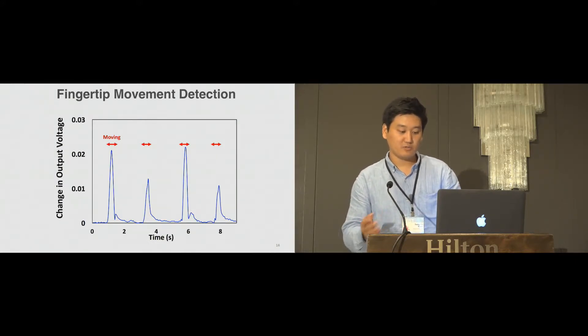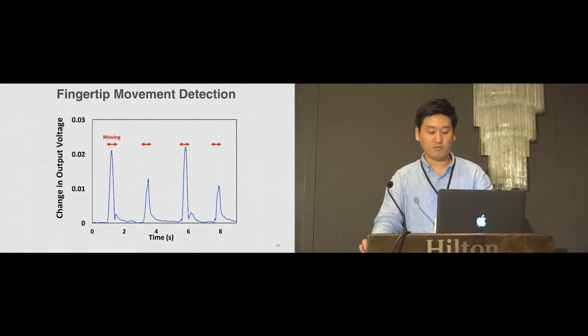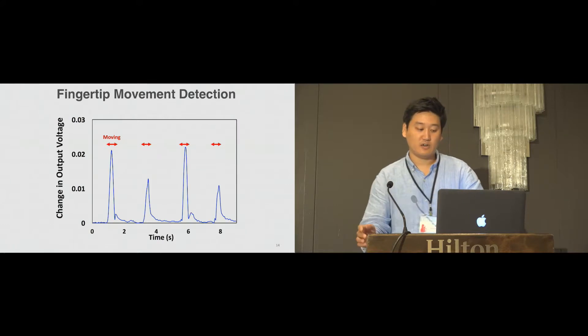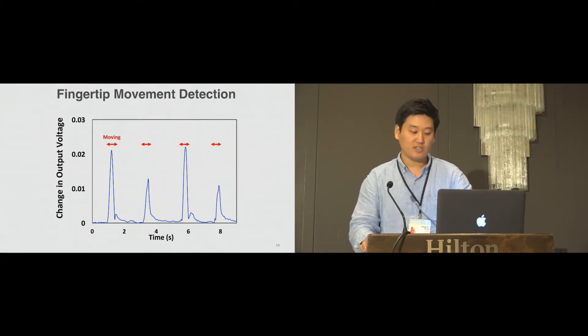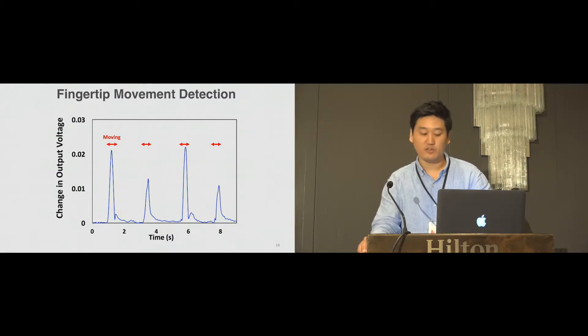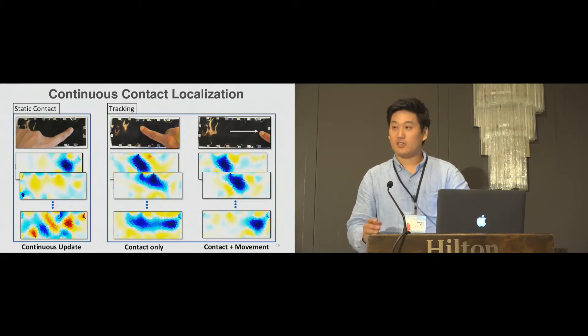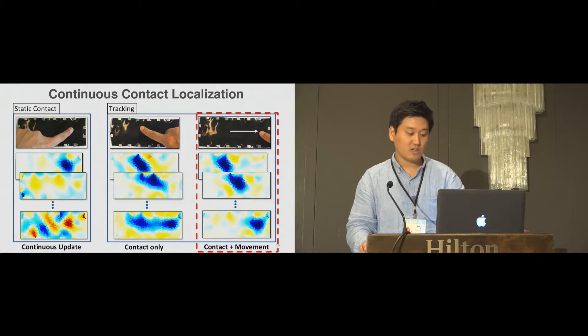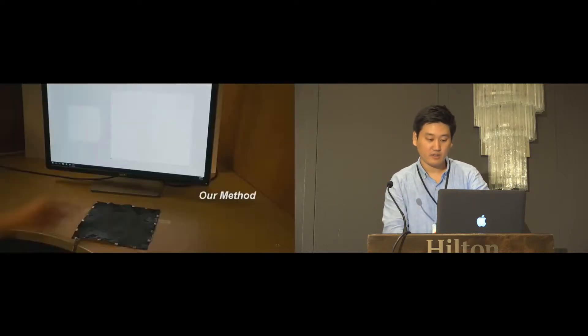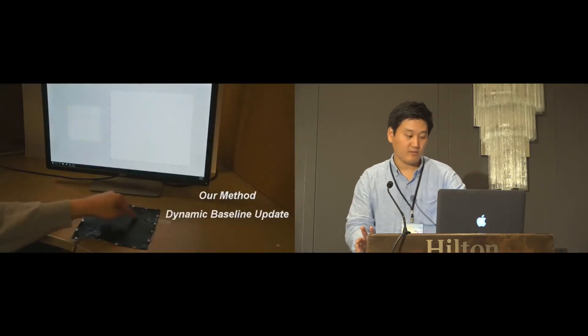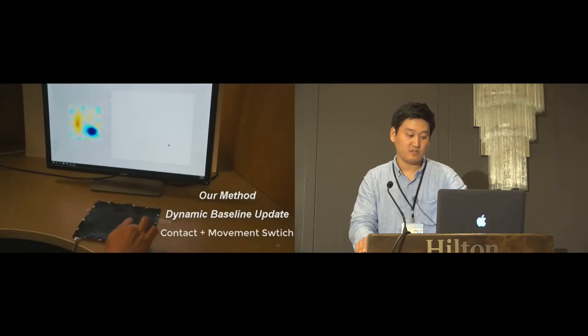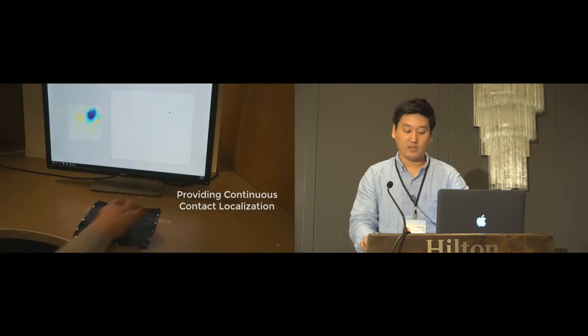We observed that the average of the over-channel measurements of the change in output voltages increase subsequently upon fingertip movement. We utilize this change in output voltage as an indicator to detect fingertip movement. The running average of 5 frames, which is 0.1 seconds in real time, is used to provide stable and robust interaction. By employing both contact and movement detection, we provide continuous contact localization in real time. As you can see from this video, any form of continuous contact localization becomes feasible. More detail on system workflow can be found in the paper.